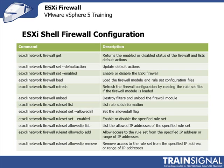From an ESXi shell firewall configuration perspective, for those who don't want to configure ESXi from the GUI and want to go through shell or command line, these are the different commands you can use against the firewall to configure it. There's a list of commands with descriptions if you want to configure your firewall from command line. What we're going to do now is use the GUI — I'm going to switch over to our vCenter and show you how to configure the ESXi firewall through the GUI.